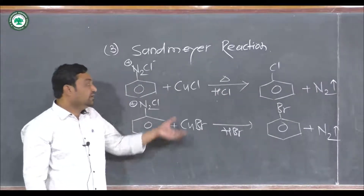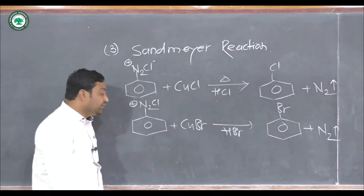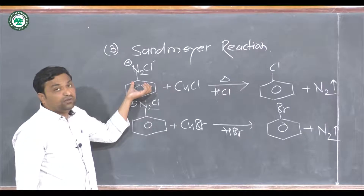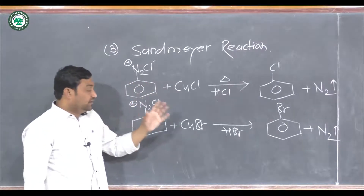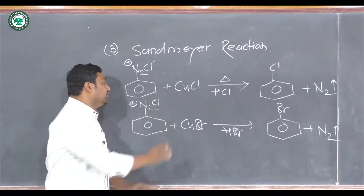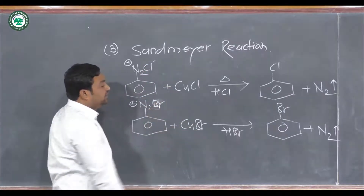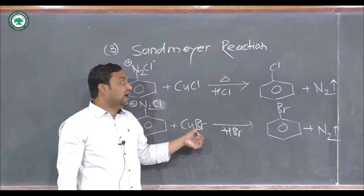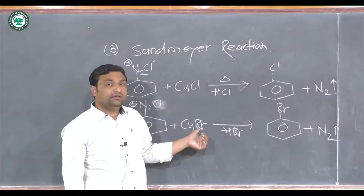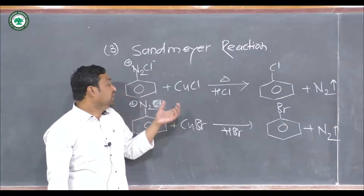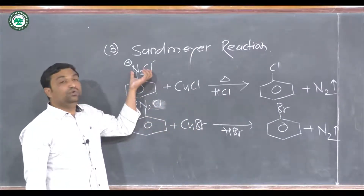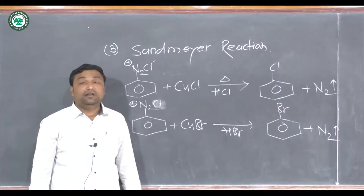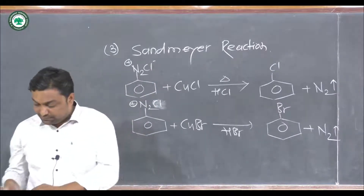Similarly, if we react the diazonium salt with cuprous iodide (CuI), the iodine nucleophile I⁻ also replaces the N2 group to form iodobenzene as a product. This is all about the Sandmeyer reaction. The last preparation of aryl halide is the Hunsdiecker reaction.